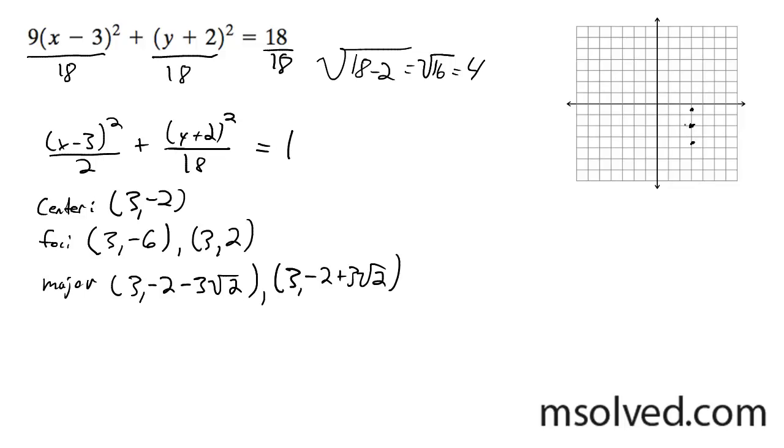And then, so for our major axis, oh, that's wrong. Sorry about that. There we go. So then, 3 root 2 is just a little bit more than our foci.